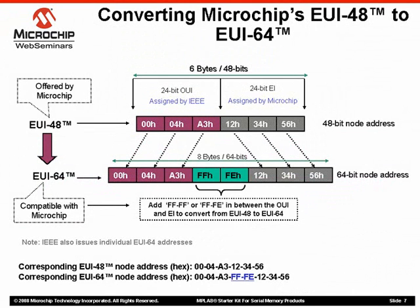Now let's take a closer look at the EUI-48 and EUI-64 node addresses. Microchip's MAC address chips are EUI-64 compatible as well. By having your software insert the 16-bits FFFF or FFFE in between the OUI and EI, the EUI-48 address can be converted to a unique EUI-64 node address. These 16-bit codes have been specifically reserved by the IEEE to help convert an EUI-48 node address to a unique 64-bit MAC address. So in the example here, the 48-bit node address is 0004A3123456, while the corresponding 64-bit node address is 0004A3FFFE123456.